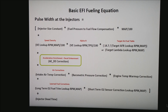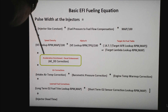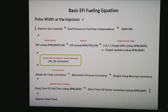The next piece comes from the acceleration enrichment. It's simply coming off a lookup table that you've set in your ECU, and any time acceleration enrichment is needed — due to a drop in manifold air pressure or an increase in throttle position — it kicks in. This is all adjustable in your ECU.